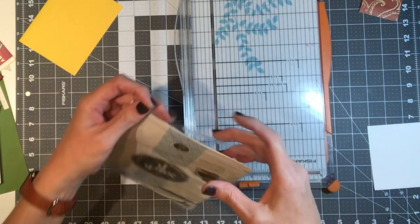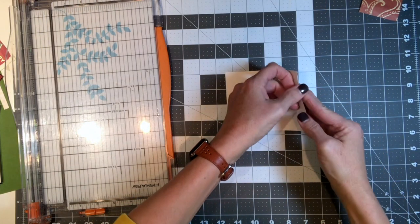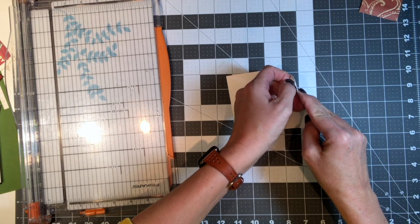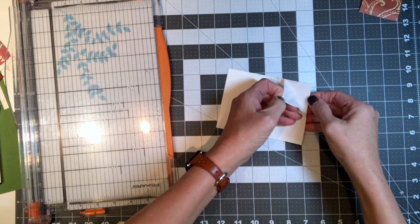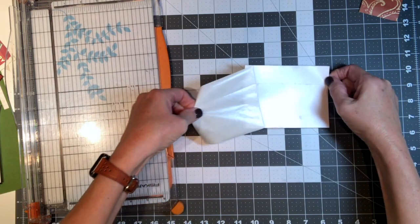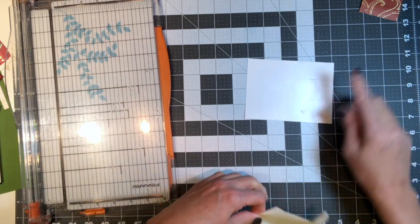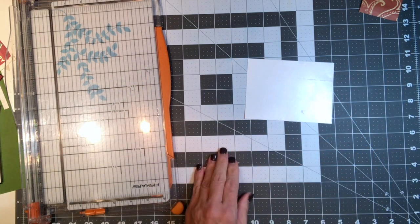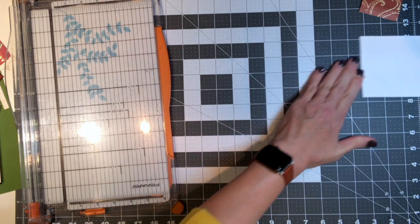Now I'm going to peel the backing off of this stick it adhesive that one side is pressed down to the paper. And when I take the release paper off, what it leaves me with here is the stickiness. So I have a very sticky piece of paper here.